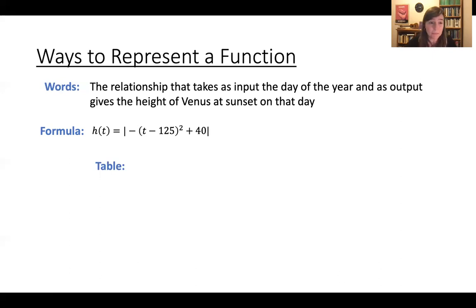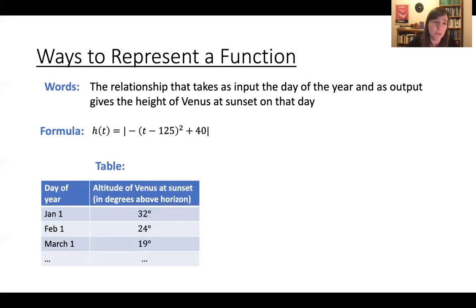We can represent it in a table. So here you might have in your table the day of the year and your observations of the altitude of Venus at sunset in degrees above the horizon. Like maybe you're looking at January 1st and Venus is about 32 degrees above the horizon. February 1st is 24 degrees. March 1st it's 19 degrees. So these are all measurements you could make of your function and then you can organize those into a table.